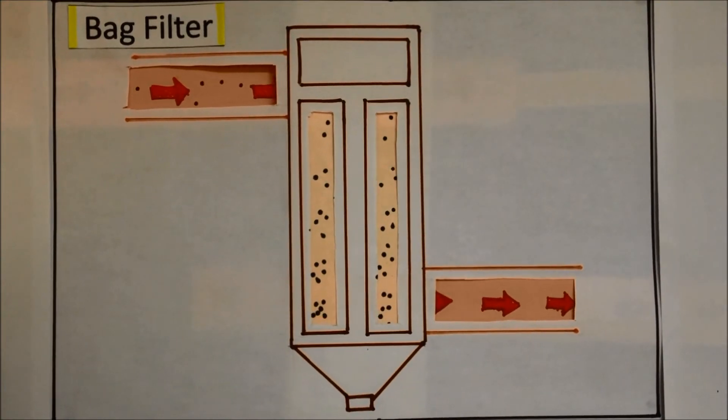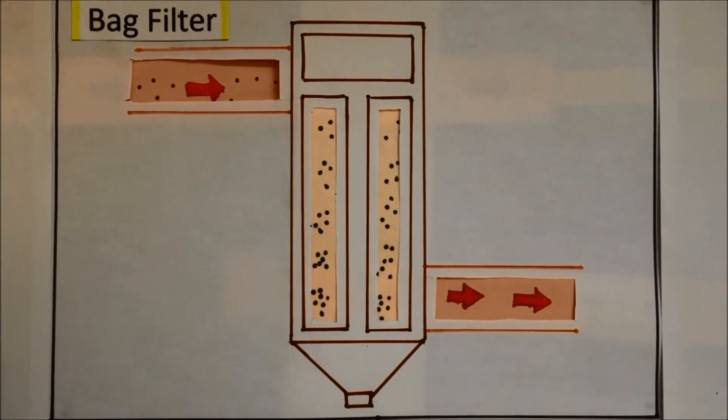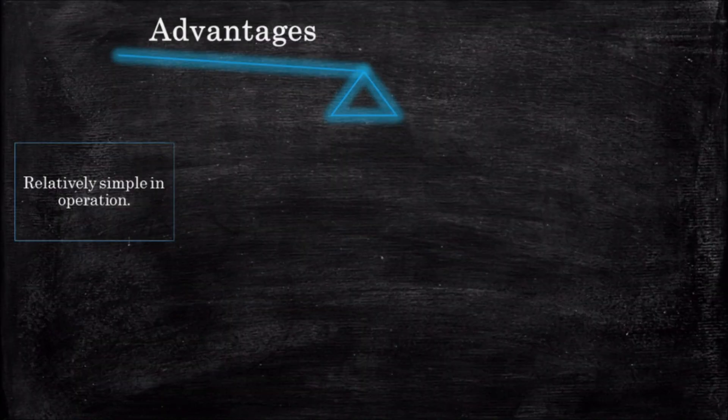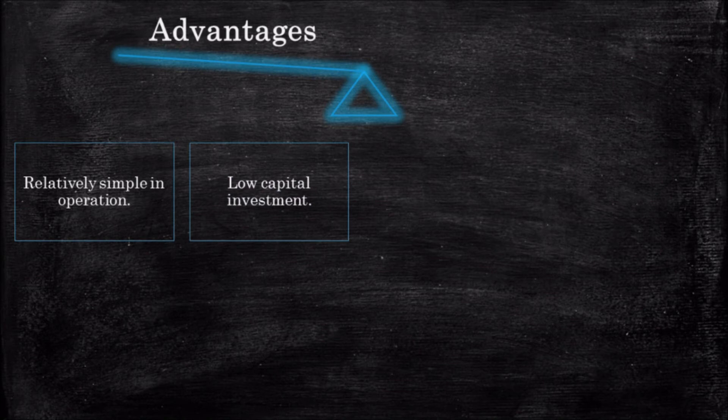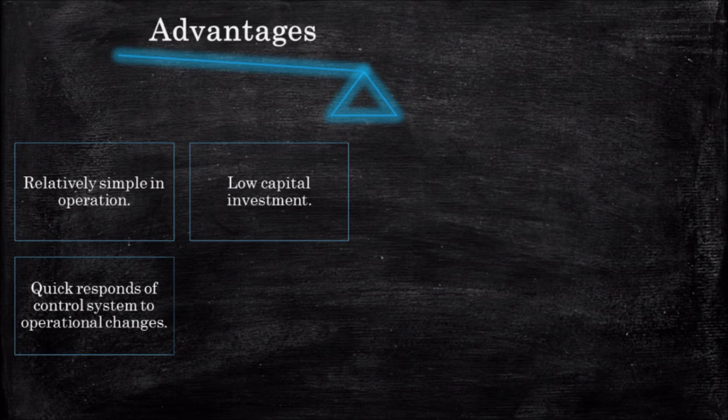An exhaust fan draws the hot gas from the drying column through the gas-solid separation section. Advantages: relatively simple in operation, low capital investment, quick response of control system to operational changes, and saves space.